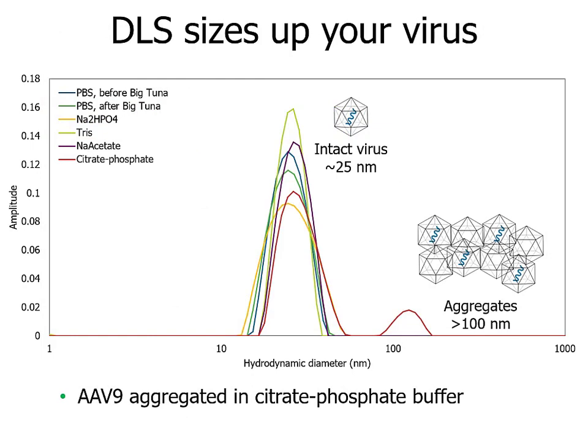DLS is a great way of looking at a quick snapshot of your virus sample quality. Intact viruses are about 25 nanometers in size. For most of our buffers, you can see just that single peak at about 25 nanometers in the DLS intensity distribution, indicating all the virus was intact, nicely monodispersed, and non-aggregated. However, if you look at the red line — the citrate phosphate buffer — you can see a second peak above 100 nanometers, corresponding to aggregated samples. AAV9 aggregated most in this acidic citrate phosphate buffer, which also explains the lower than expected percent recovery by ELISA. The ELISA is sensitive only for intact viruses and doesn't bind AAV aggregates, so a significant portion of the AAV capsids locked in aggregates weren't detected.